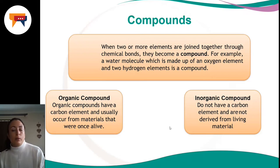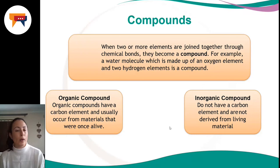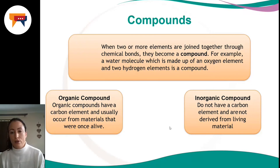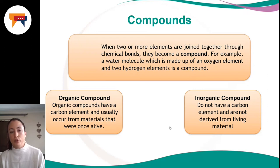We get two different types of compounds: organic compounds and inorganic compounds. An organic compound contains a carbon element and usually occurs from materials that were once alive. An inorganic compound does not have a carbon element and is not derived from living material. In high school physics, you do a lot of organic chemistry, which refers to all the different compounds that involve carbon.